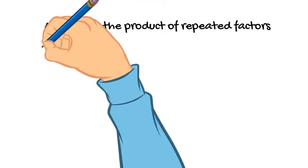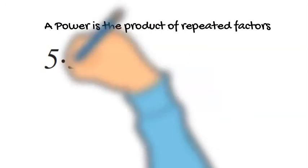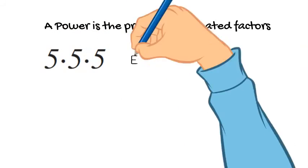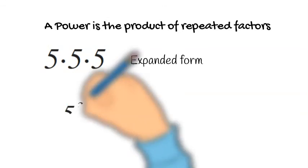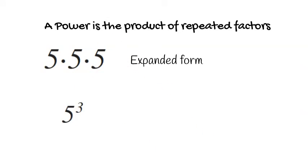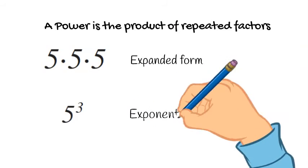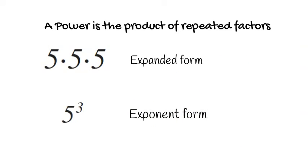So for example, 5 times 5 times 5 is a power in expanded form. We can write it as 5 to the third, which is the power in exponent form. Both 5 times 5 times 5 and 5 to the third are powers.